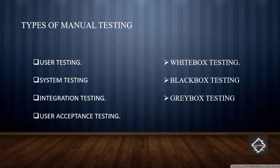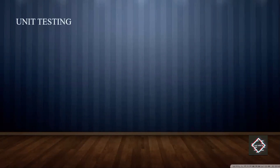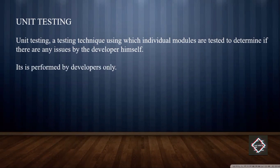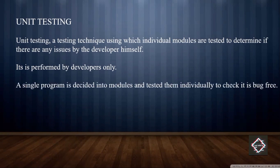First comes unit testing. Unit testing is where individual modules are tested to determine if there are any issues, and it is performed by the developer itself during development. A single program is broken into modules, and each module is checked individually. When a developer has designed a code or project, unit testing is performed by the developer — not by testers.